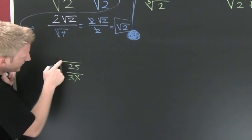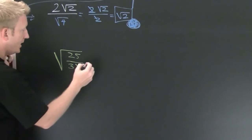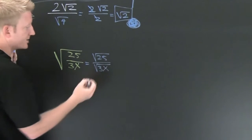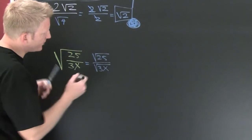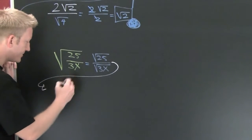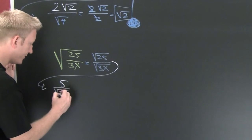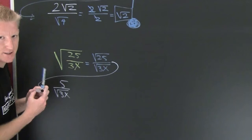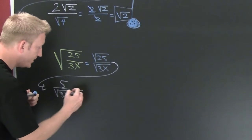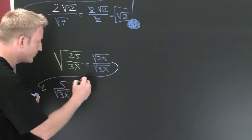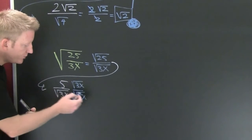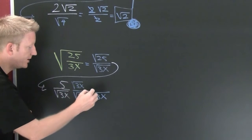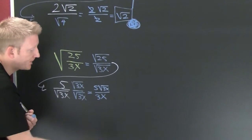For the next one, we have the root of the quotient is the quotient of the roots, so I can break it up just like that: square root of 25 divided by the square root of 3x. What's the square root of 25? It's 5 divided by the square root of 3x. Now we've got to rationalize that denominator. I'm going to multiply top and bottom by the square root of 3x. The root times the root is going to yield the radicand, so that's 3x down in the bottom. And in the top I'm going to have 5 times the square root of 3x. And then you're done.